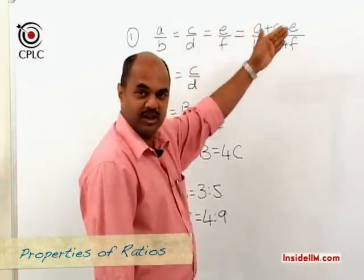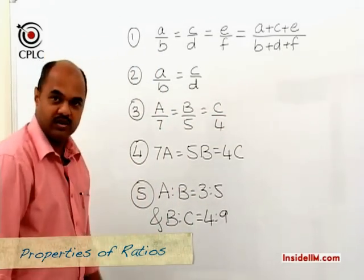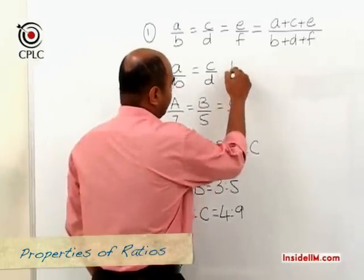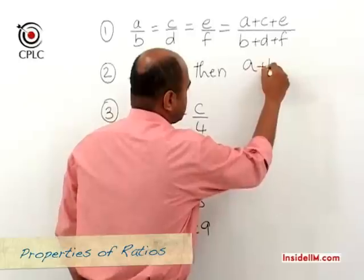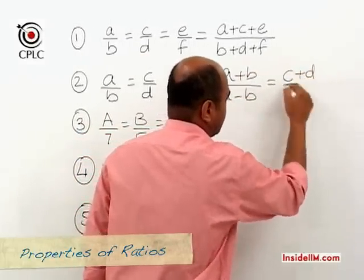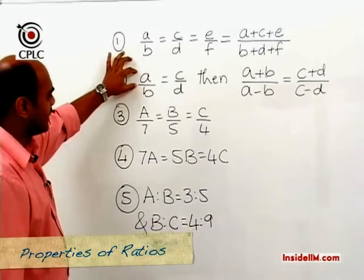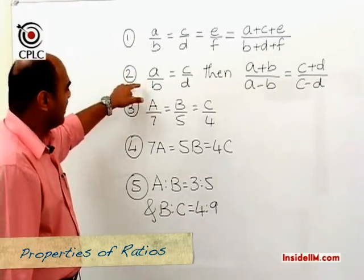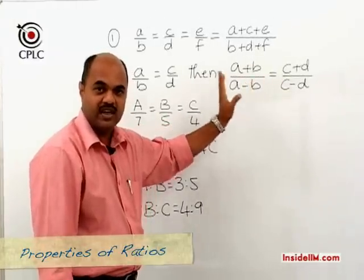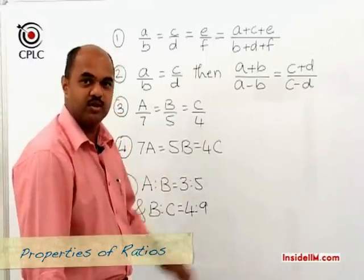The second property: if A/B = C/D, then (A+B)/(A−B) = (C+D)/(C−D). What we've done is taken the sum of the numerator and the denominator divided by the difference of the numerator and the denominator on each side, and they would be equal. This property is commonly known as Componendo Dividendo and is extremely useful in problems.